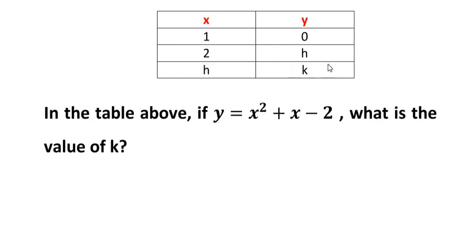To solve this, we have to go for the substitution method. Let us start with the first row where the x value and the y value is given. For example, the y has to be 0 when the x value is 1. When we substitute the value of x in this equation, let's see if we get y value as 0.